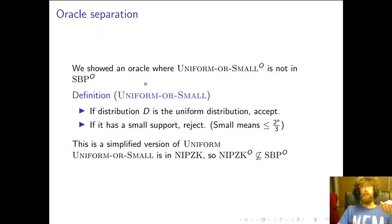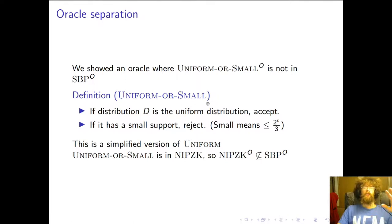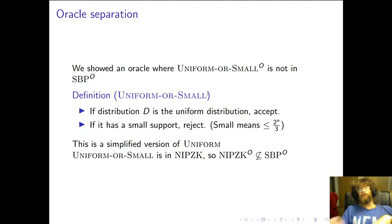Our first oracle separation — preemptively obsoleted by permutation testing — shows that the problem Uniform-or-Small is not in SBP. The problem is: given a distribution, accept if it's the uniform distribution, reject if it has small support. It's a simplified version of the complete problem for NIPZK. It's still in NIPZK, but it's not in SBP relative to an oracle, so we get this oracle separation.